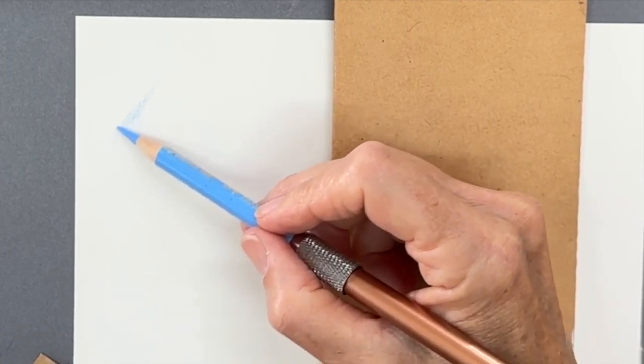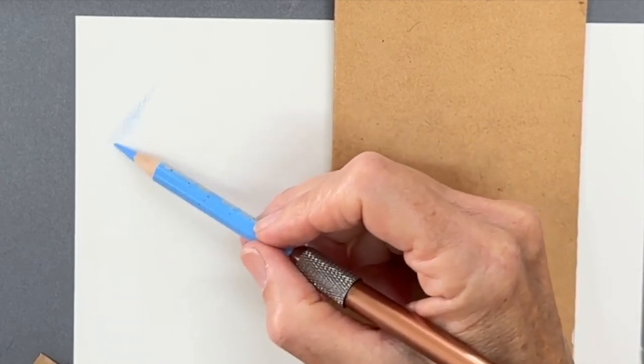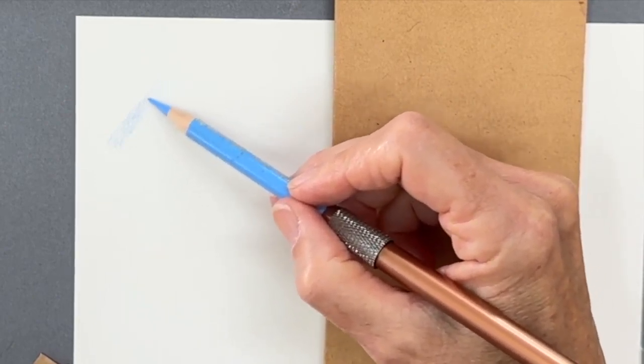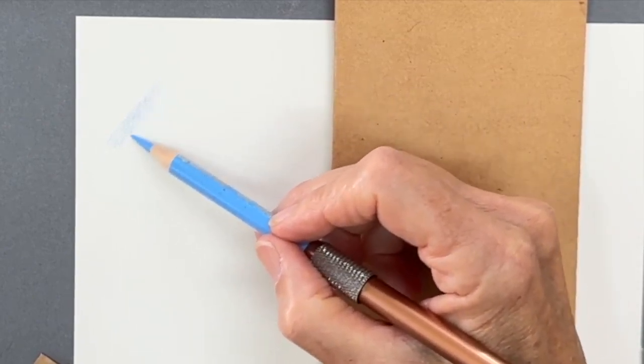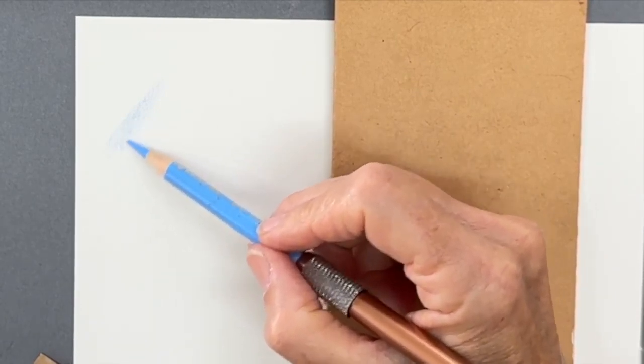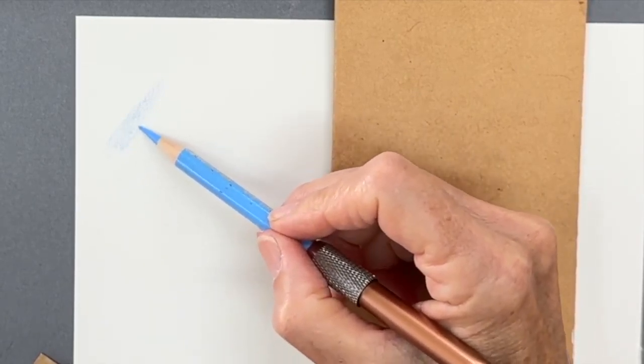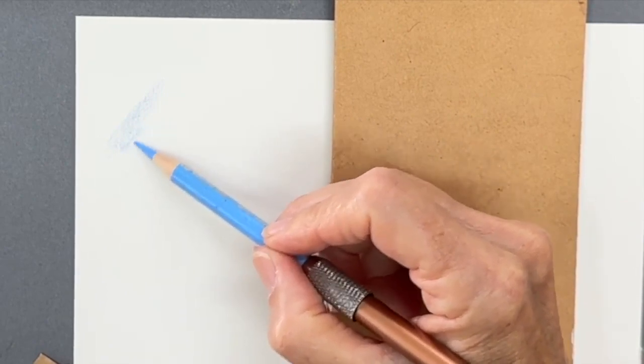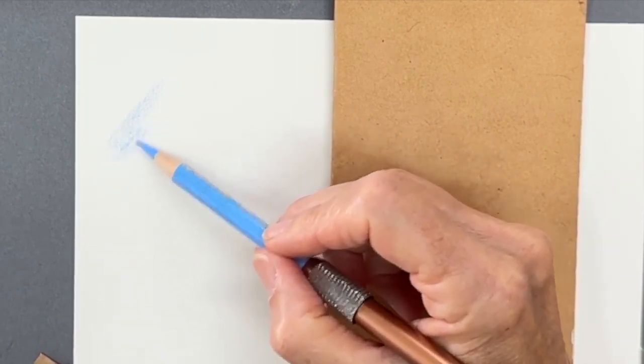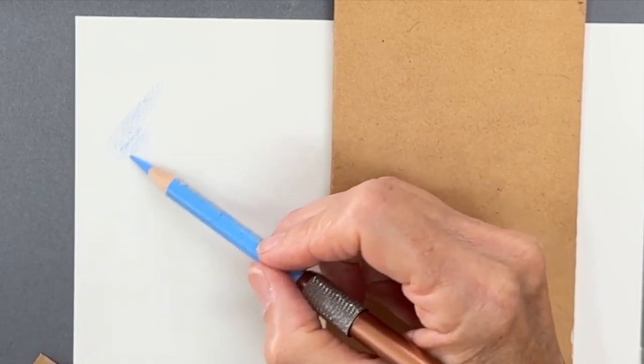Now, one issue people face is suddenly doing a slightly harder stroke, and you end up with a bit of a line. That's okay because we can just fix it.